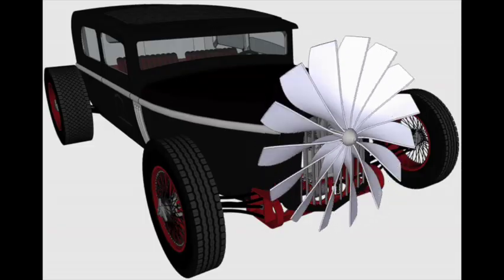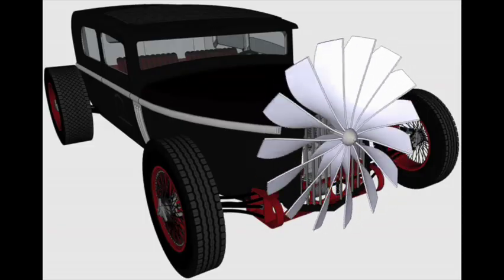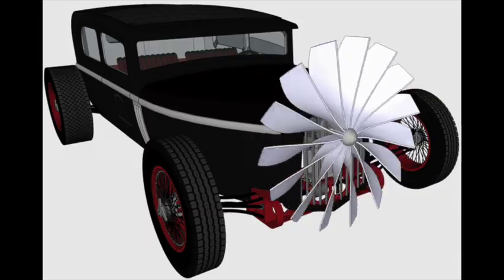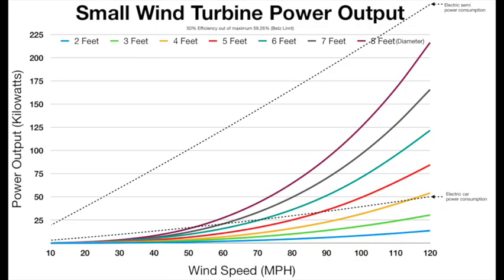The turbine would spin a direct current generator that would power the battery that would power the drive motor. At around 90 miles per hour this vehicle experiment could be perpetual.